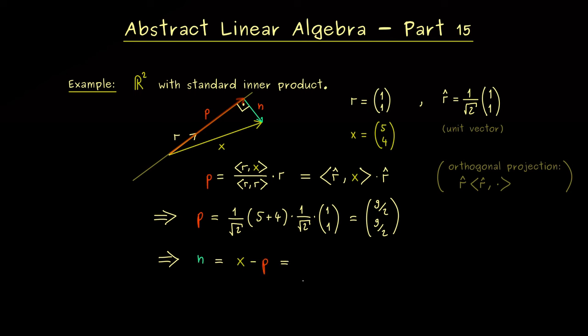And then in the next step we can also calculate n, which is simply x minus p. So in the first component we subtract 9 halves from 10 halves, so we get out one half. And in a similar calculation in the second component we get out minus one half. So you see, calculating orthogonal projections is really not so complicated.